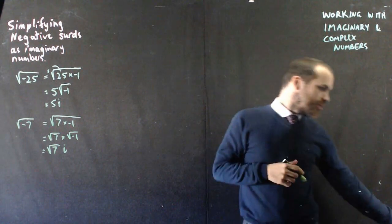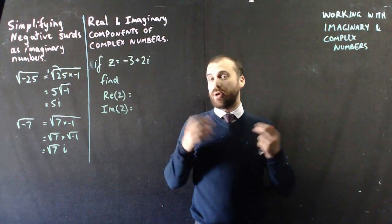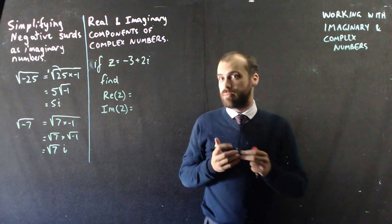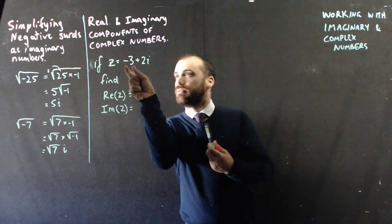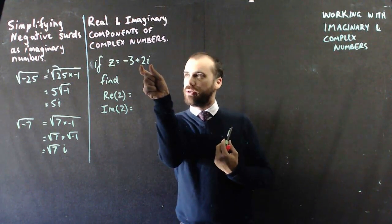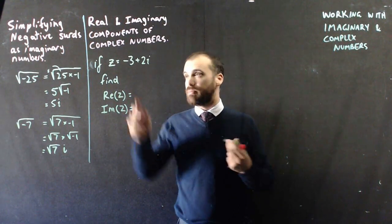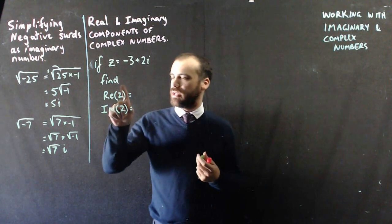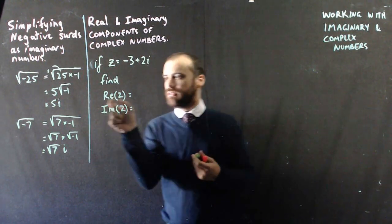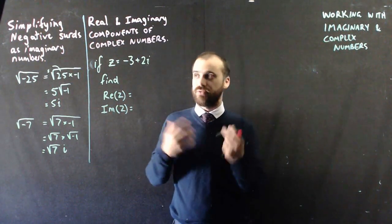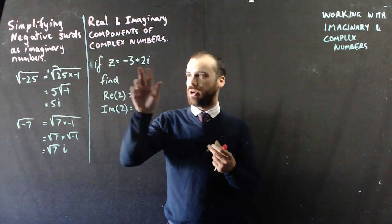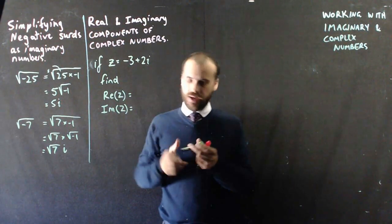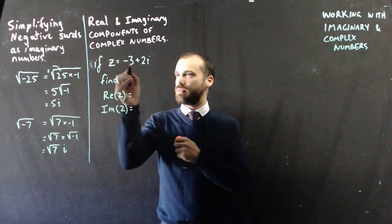Alright, so this time we're looking at the real and imaginary components of complex numbers. Now remember a complex number has a real component and an imaginary component. So I've said the complex number z is negative 3 plus 2i. Find Re(z), the real component of z. Well, z is made up of two components, a real component and an imaginary component, and the real component of this one is here: